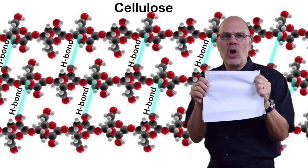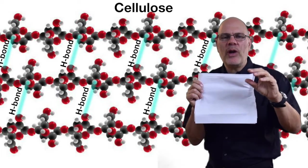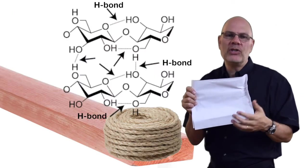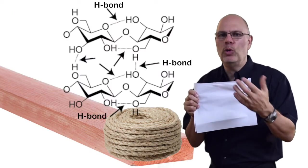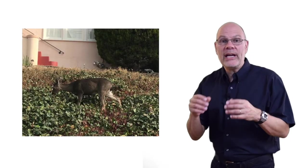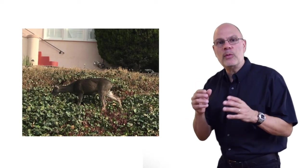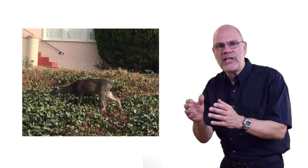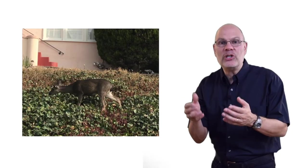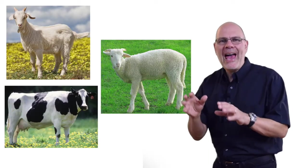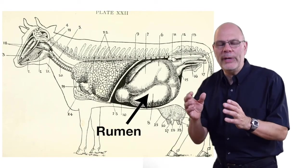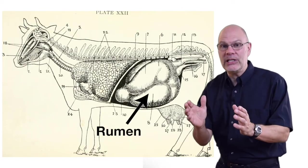Cellulose is strong because cellulose strands form hydrogen bonds with one another, and the collective effect of those hydrogen bonds creates a strength we see in things like rope and wooden boards. Mammals like deer have evolved mutualistic relationships with bacteria that have enzymes that can break the glucose monomers off of cellulose, making its chemical energy available. Other mammals like goats, sheep, and cows have these same mutualistic bacteria, and they live in a digestive chamber called a rumen. Collectively, these animals are called ruminants.